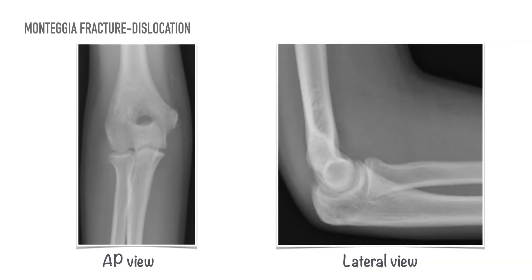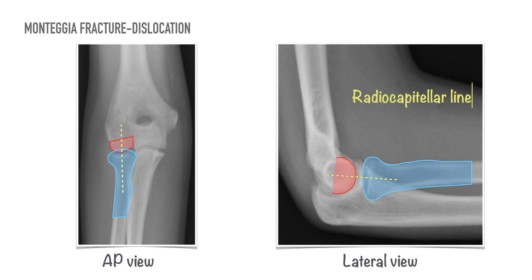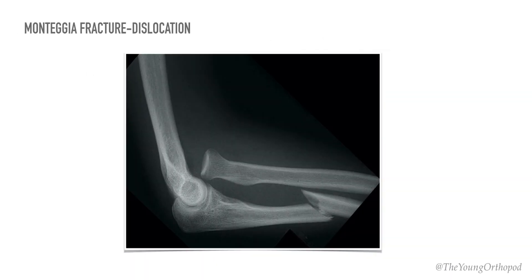On a radiograph, how do you identify radial head dislocation? Normally, a line drawn down the neck of the radius should intersect the capitulum — this is called the radiocapitular line. If the line does not intersect the capitulum, there is radial head dislocation.